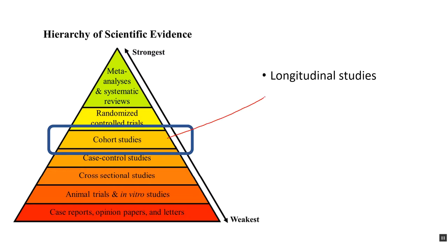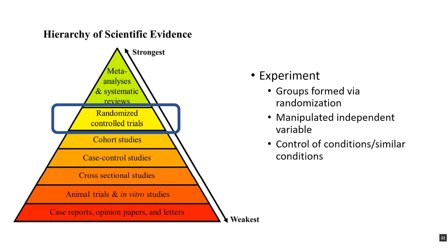Cohort studies — in research methods, those are the longitudinal studies. And then finally, randomized controlled trials. These are the experiments, and they have the three major elements: groups formed via randomization, a manipulated independent variable, and control of conditions with similar conditions for the experimental group and control group, except for the independent variable.